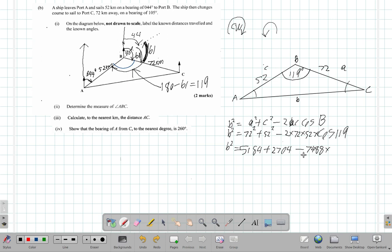So continuing, b squared is equal to 5,184 plus 2,704 is equal to 7,888 minus, it's going to be a minus negative, so a minus and then this times this negative.